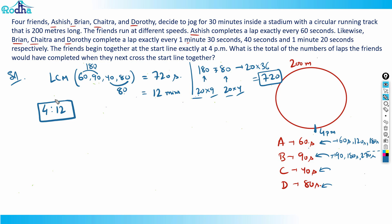In 720 seconds, Ashish would have completed 12 laps. A is covering every 60 seconds, so 720 divided by 60 equals 12 laps. A lap is one complete round.